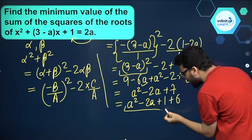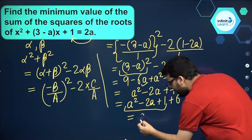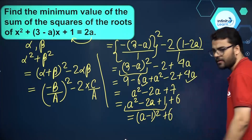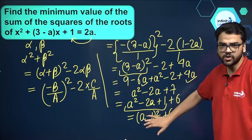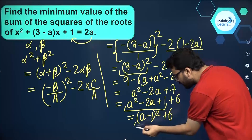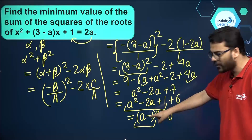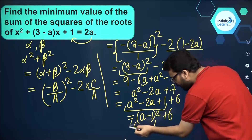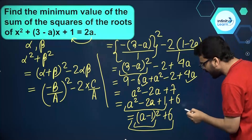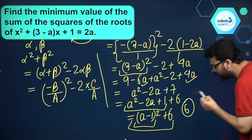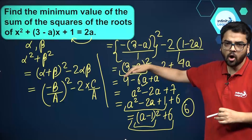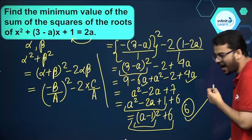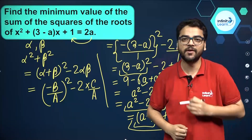Now, a square minus 2a plus 1 is nothing but (a minus 1) the whole square. So the expression becomes (a minus 1) the whole square plus 6. The minimum value of (a minus 1) the whole square is 0, which occurs when a equals 1. Therefore, the minimum value of the whole expression is 6. The minimum value of the sum of the squares of the roots of this quadratic equation is 6.